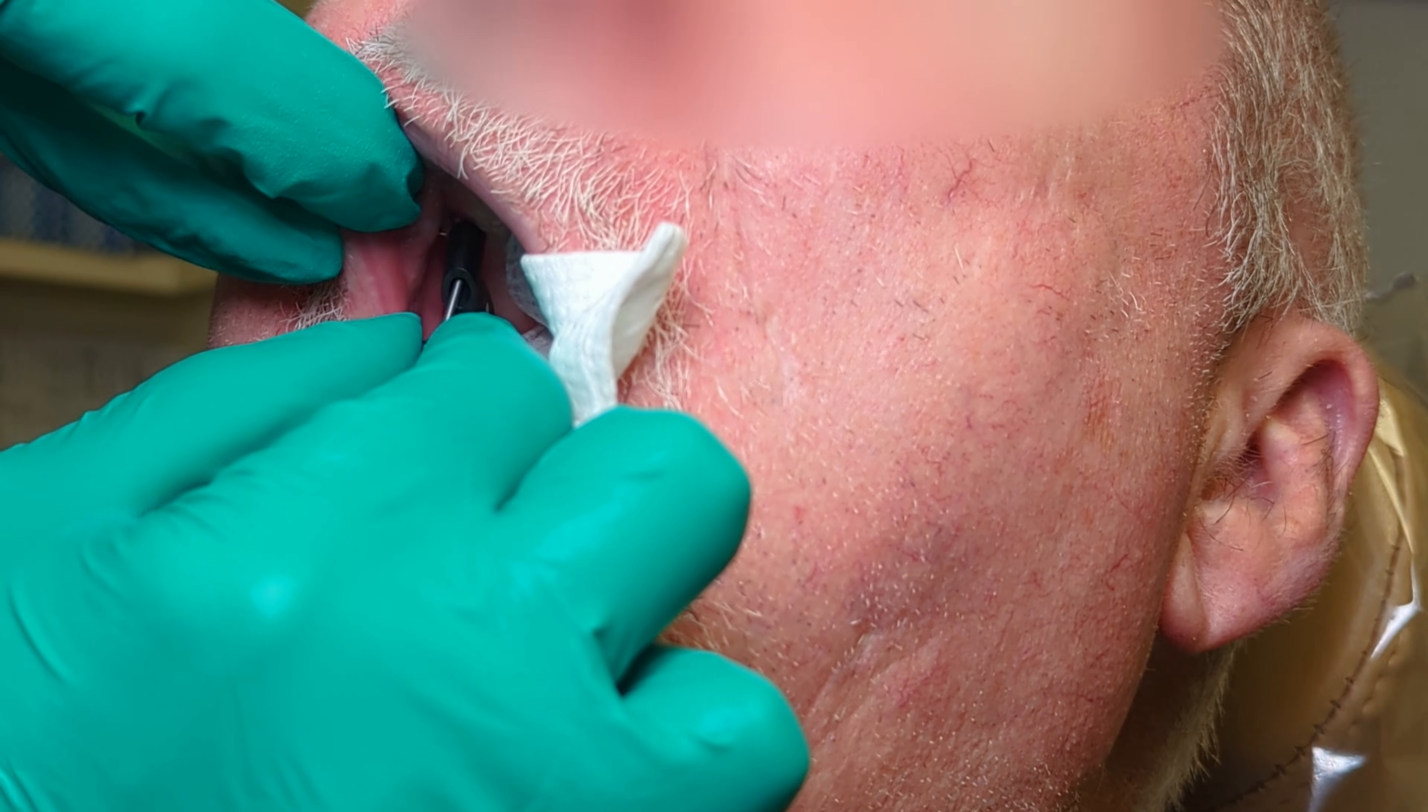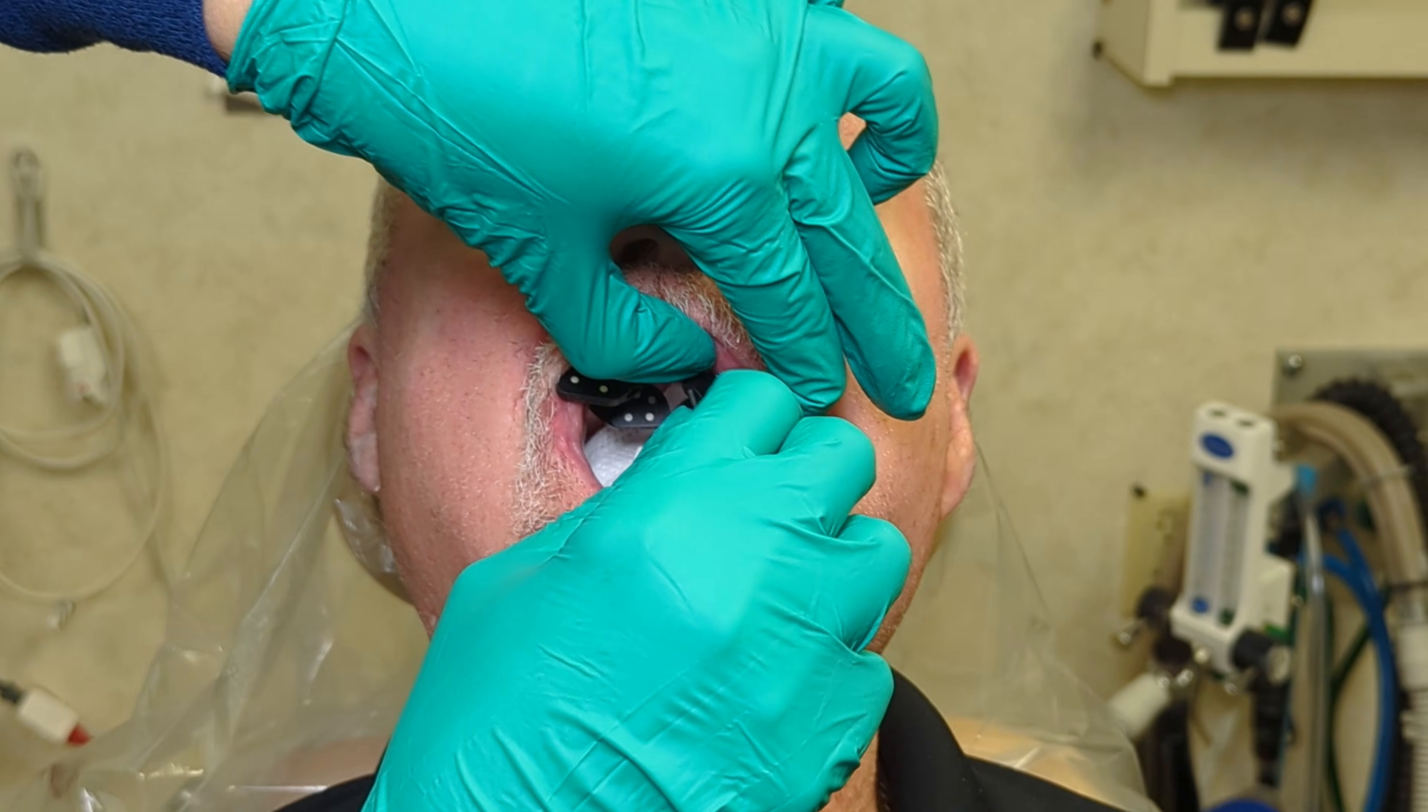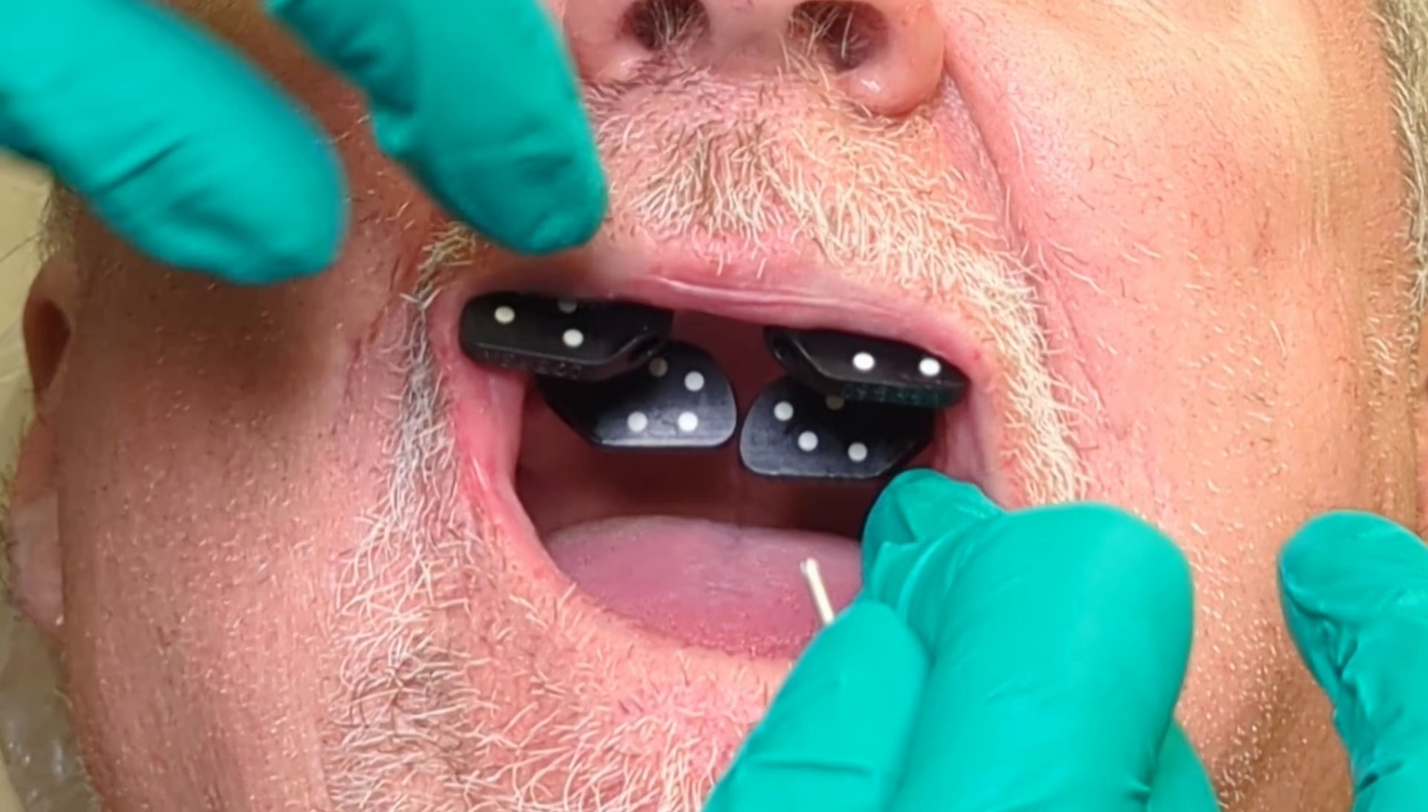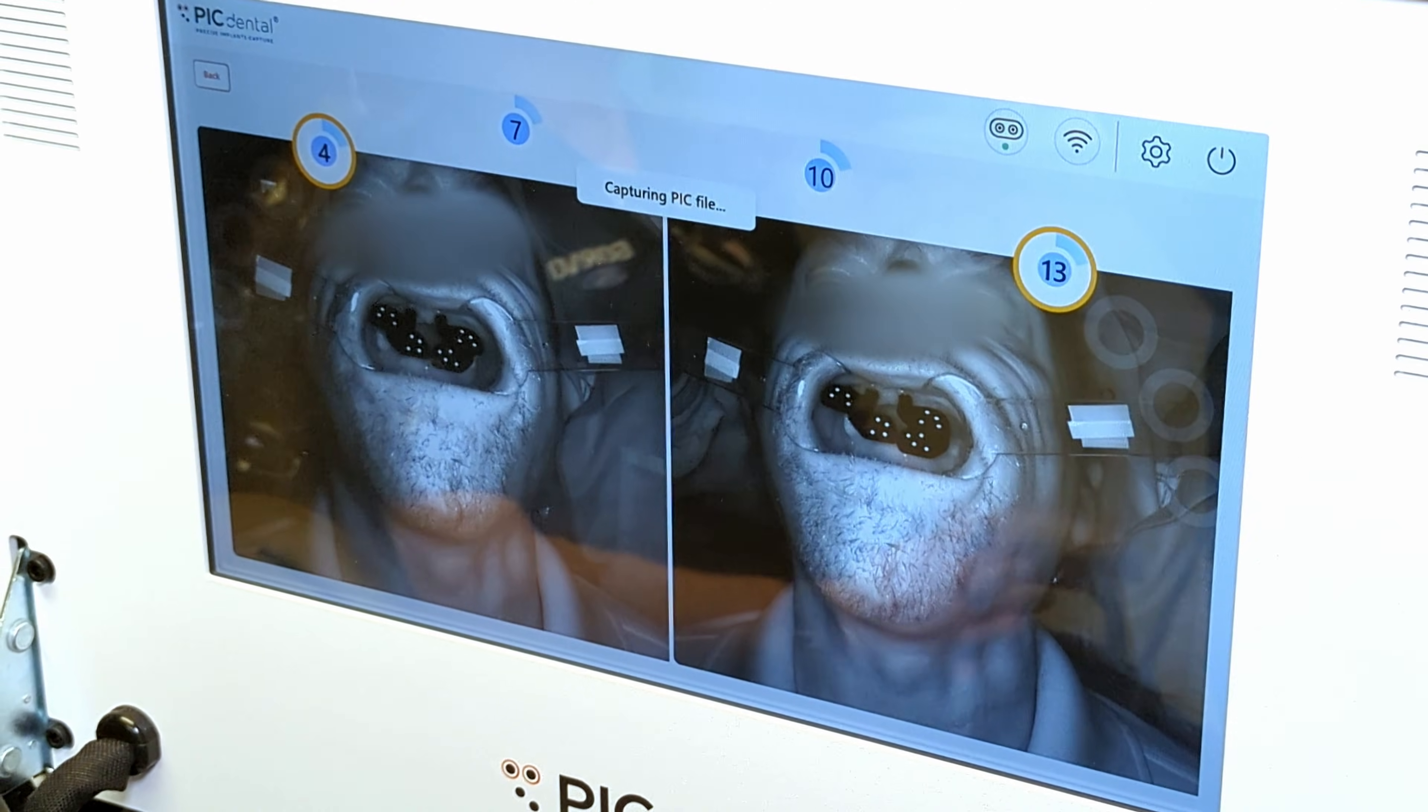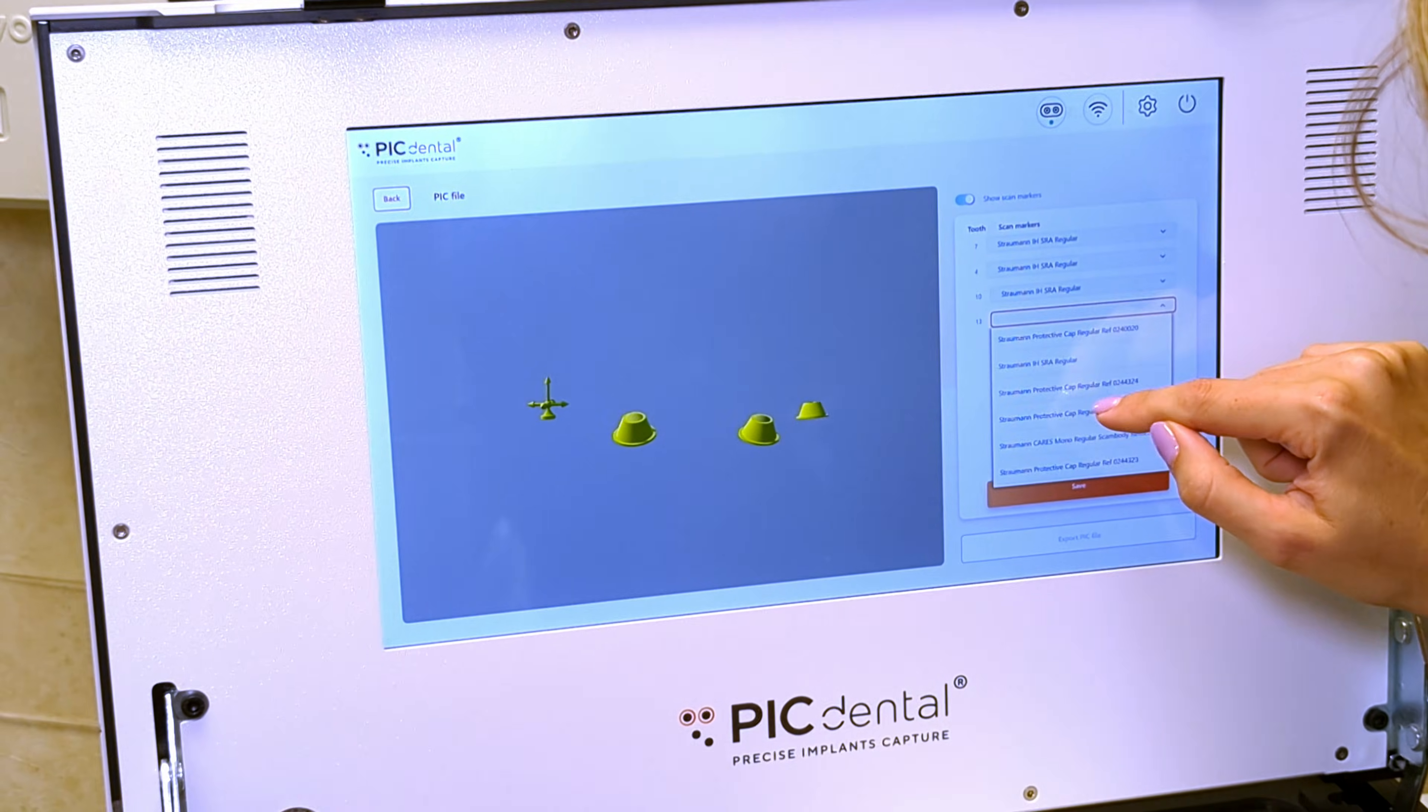All the scan flags are positioned onto the multi-units in the patient's mouth in the order they were initially organized on the tray. Hand-tighten them and tilt the flags so that all the dots are visible from a straight view. Using retractors to open the patient's mouth, we then use the photogrammetry camera to capture the position of all the flags. The position is then output as an STL file reflecting the specific situation in the patient's mouth.